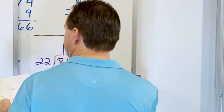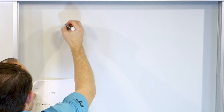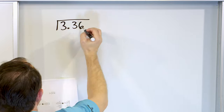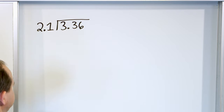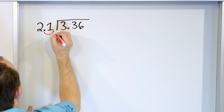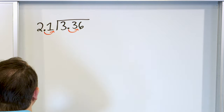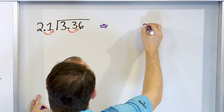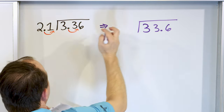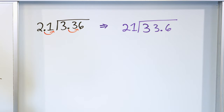Alright, moving right along. Problem number six: let's say we have 3.36 and we want to divide that by 2.1. On the outside, we have a decimal — we don't want any decimal — so we move one position on the outside, and we move this decimal one position also. So really we're going to solve the related problem of 33.6 divided by 21. Move the decimal one position, one position — this problem will be the same as the previous.